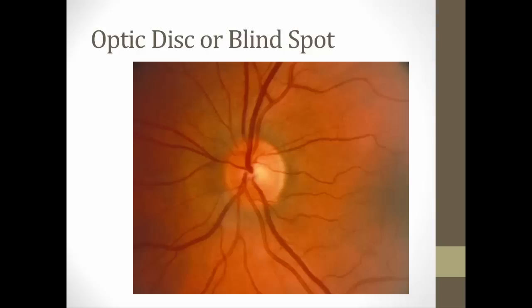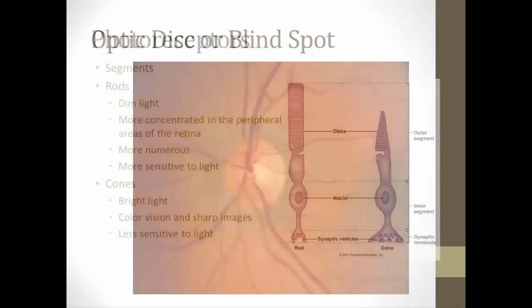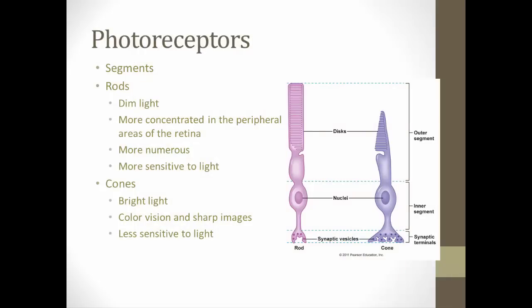Photoreceptors — rods and cones — are divided into segments. The outer segment contains photopigments in discs, and the shape of this segment gives each its name: rods have a rod shape, cones have a cone shape. The inner segment contains the nucleus, which produces the photopigments that are then transported to the outer segment. Rods are very sensitive to light and work well in dim conditions; they are more concentrated in the peripheral areas of the retina and are more numerous than cones.